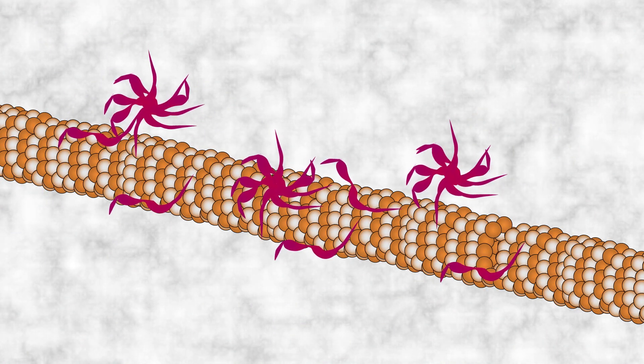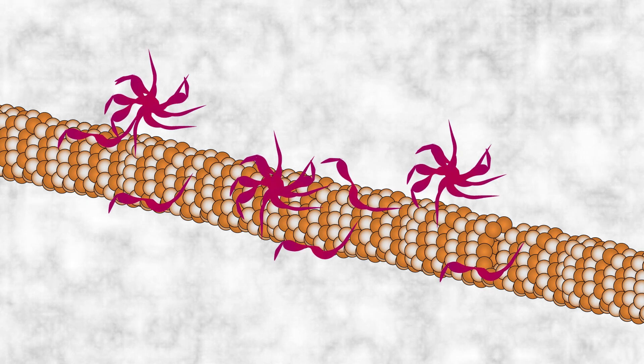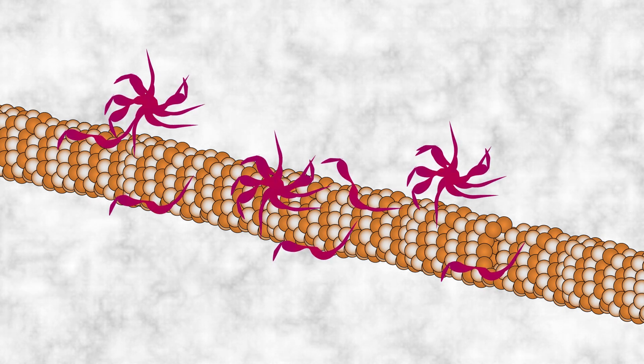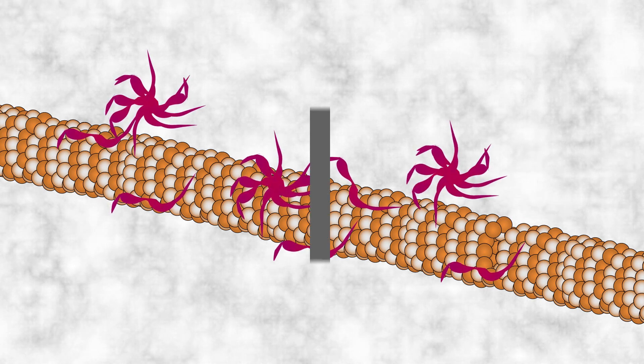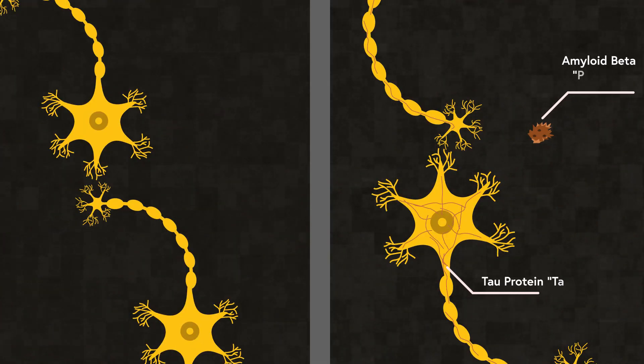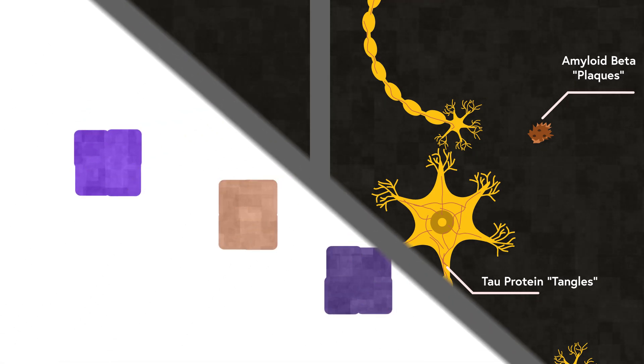Additionally, abnormal clumps of tau proteins, which normally stabilize important structural components of the neurons called microtubules, are also present. These buildup of amyloid beta proteins and tau proteins, the mechanism of which is still not fully understood, are commonly referred to as the plaques and tangles seen when examining the brains of Alzheimer's patients under a microscope.